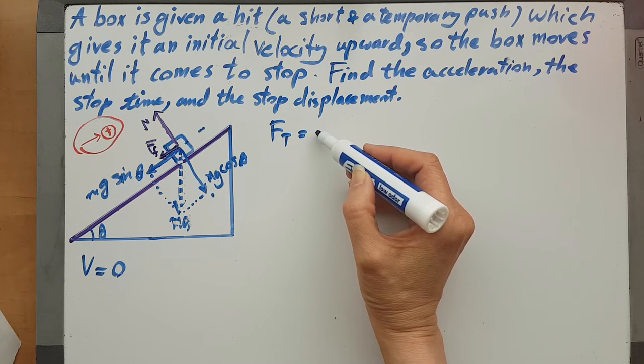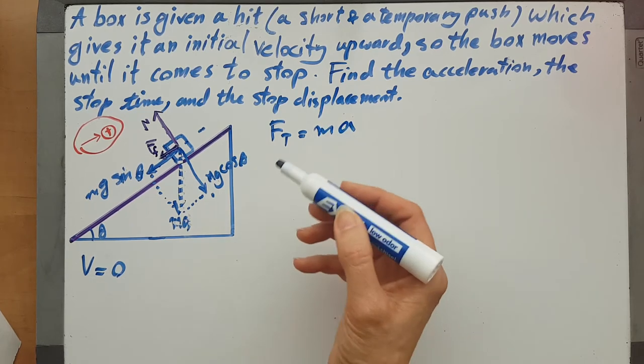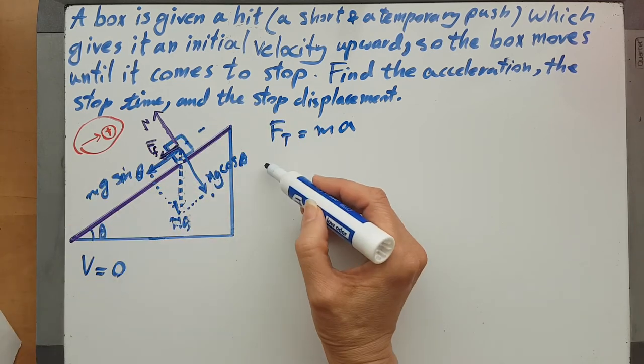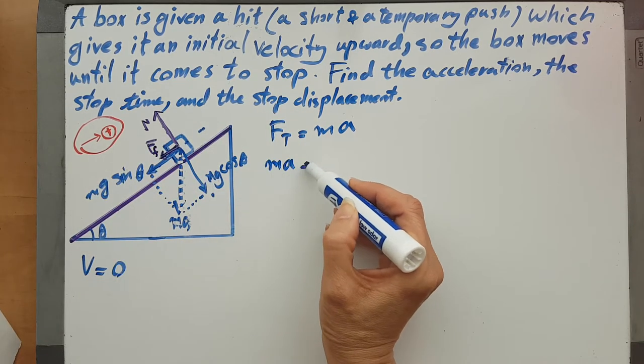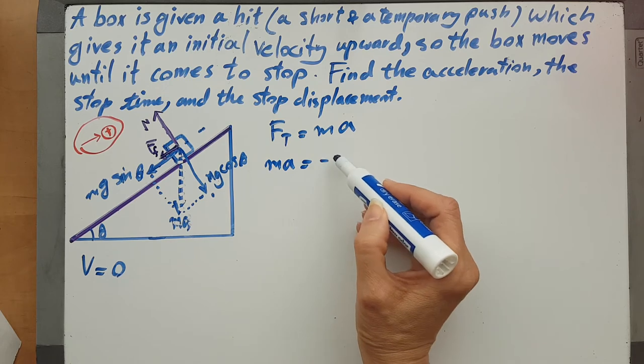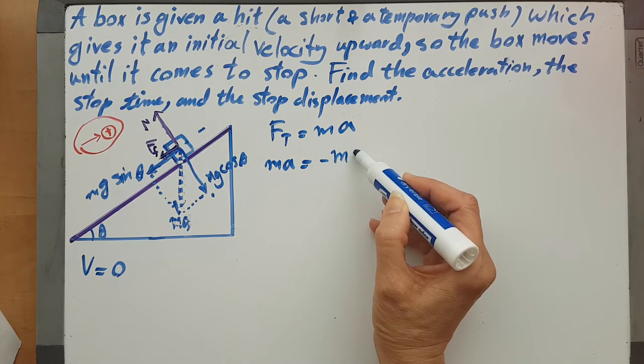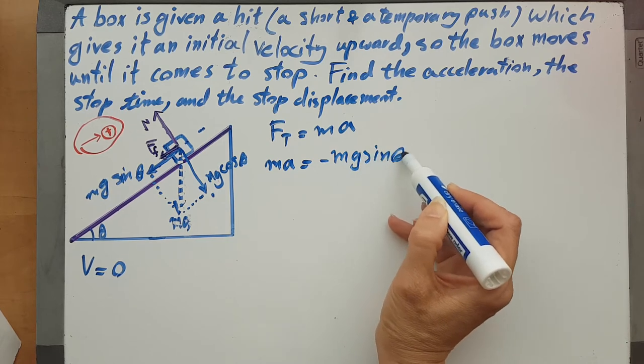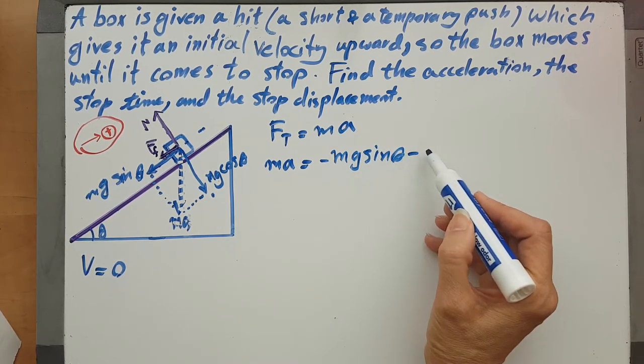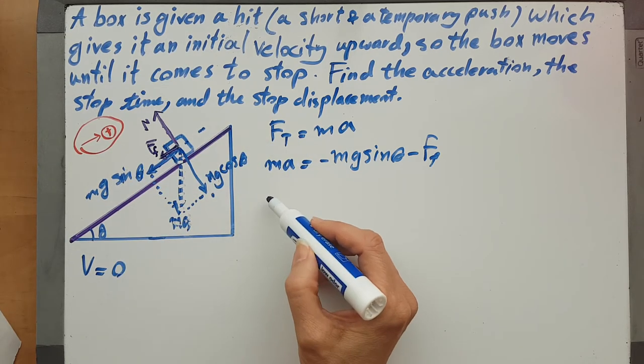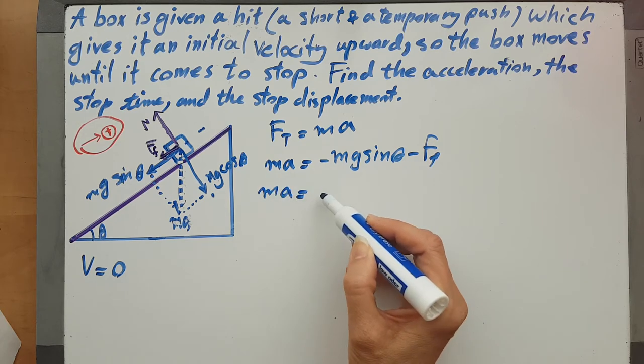I will say, of course we know that the forces that are in this direction would be negative. So I will say negative mg sine theta, and also f of friction - it would be negative because they're both in this direction. So ma equals...